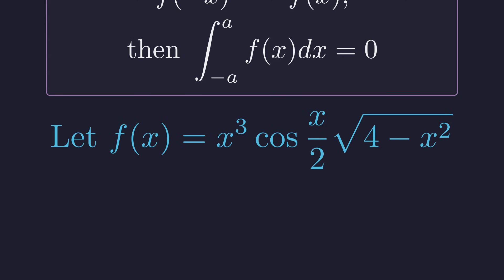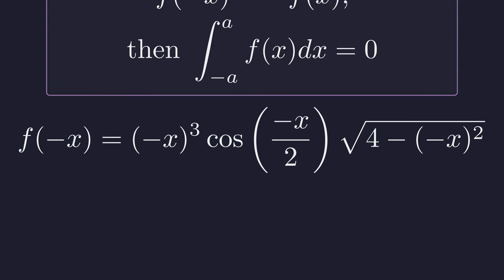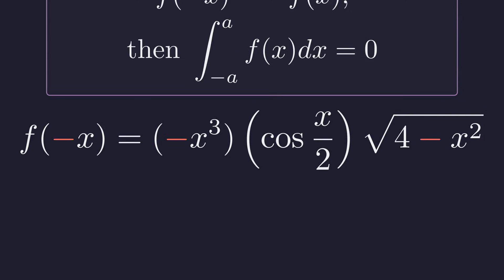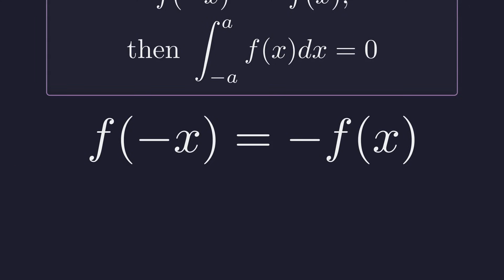So we replace every x with negative x and see what happens. Let's think about each piece: when you cube a negative number, you get a negative. Cosine is an even function, so cosine of negative something equals cosine of that something. And squaring a negative gives you a positive. Putting all that together, we get this cleaner form. And look at that—we can factor out this negative sign from the whole thing. What's left inside is exactly our original function f of x. So f of negative x equals negative f of x—that's the definition of an odd function.